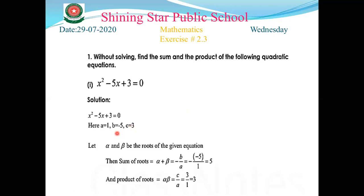To find the sum and product of the roots, let alpha and beta be the roots of the given equation. The sum of the roots is alpha plus beta. The formula is alpha + beta = -b/a. Here b is -5 and a is 1, so minus minus gives us plus five. The sum of roots is 5.